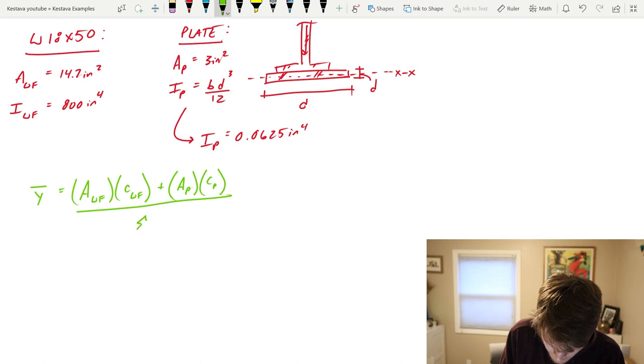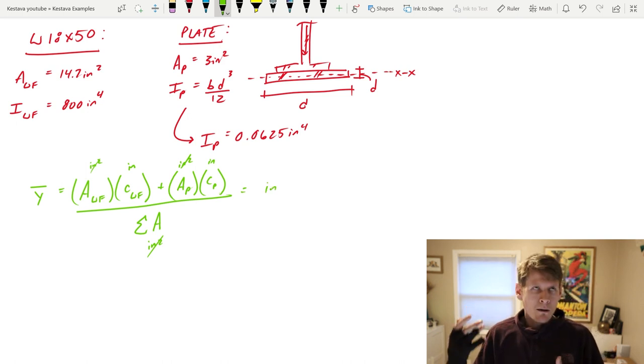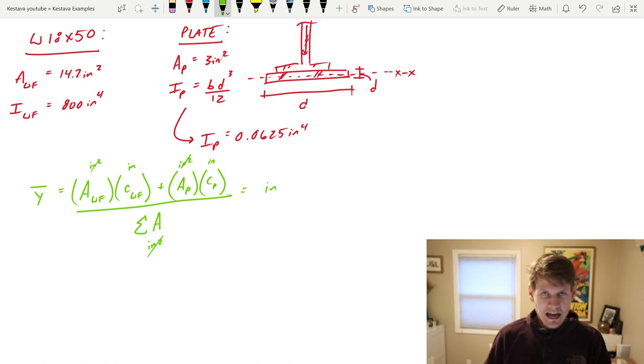All of that over the summation of area. And that will be, because this is inches squared, this is inches, inches squared, inches, and this is inches squared. That gets rid of all your inches squared and leaves you with a y bar in just inches. That was something I needed to go through to remind myself, is it the A's that cancel? Is it the distances that cancel out? I got confused sometimes but that's how I ingrained it in my head.